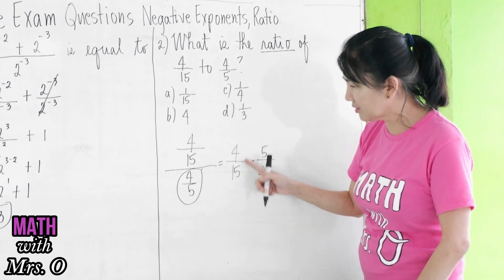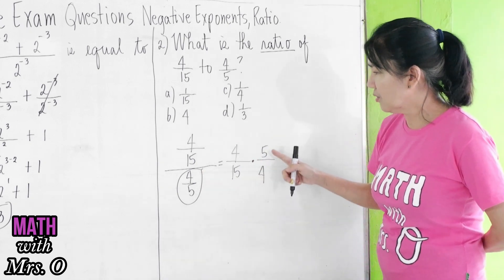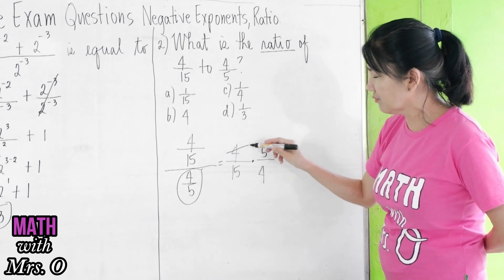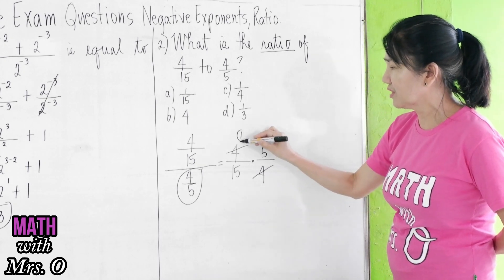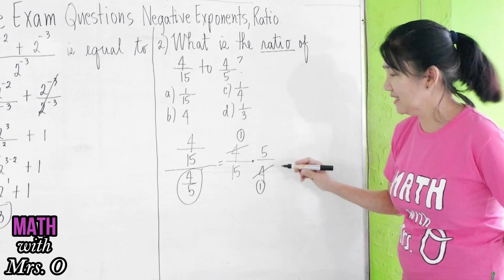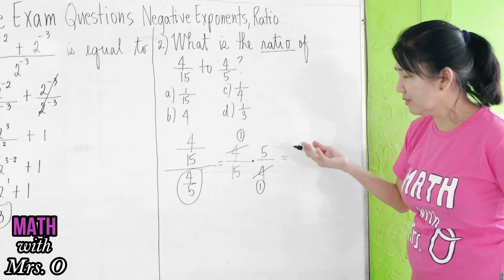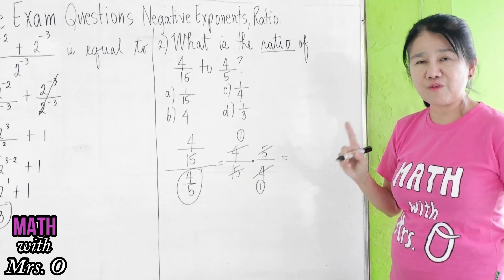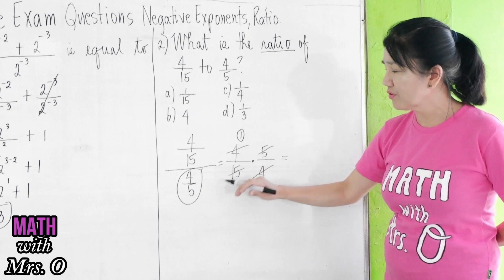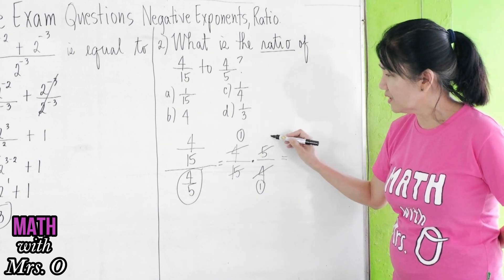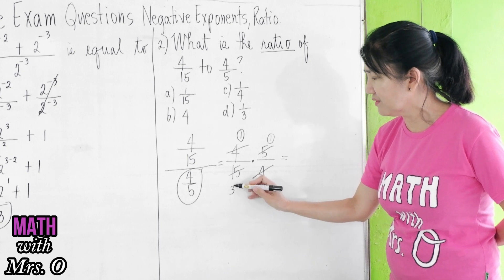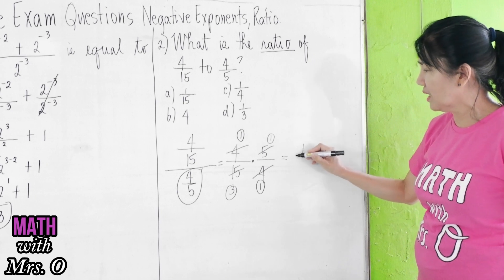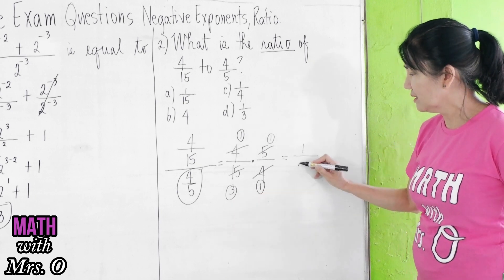You multiply the numerator and the reciprocal, or the multiplicative inverse of the denominator. From here, you see that 4 cancels with 4. When you're canceling, it means you're getting 1 as an answer. And what else? 5 cancels with 15. The greatest common factor is 5. So, you divide both by 5. 5 over 5 is 1, and 15 divided by 5 is 3. So, therefore, we have here 1 times 1 is 1 over 3 times 1 is 3.